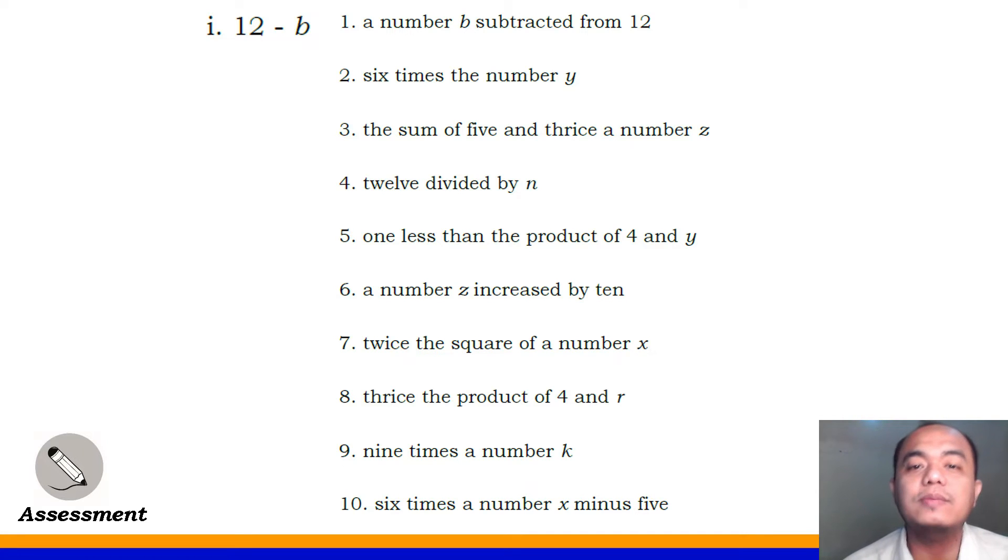Number 2, six times the number Y. Yes, letter A, it's 6Y. We won't put an X in the middle, class, because it already uses Y. So, if we put an X in the middle, most likely you'll be confused. You might think there are two variables given in number 2. When you combine a number and a letter, this means multiplication. Understood? Okay, very good. Number 3, the sum of 5 and thrice number Z. Very good, it's letter C, 5 plus 3Z.